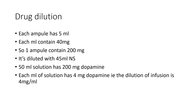Coming to drug dilution and setting up a dopamine infusion: each ampule is 5 ml, with each ml containing 40 mg, so one ampule contains 200 mg. The 5 ml is diluted with 45 ml of normal saline, forming a 50 ml solution containing 200 mg of dopamine. Each ml of the solution therefore contains 4 mg of dopamine — that is, a dilution of 4 mg per ml.